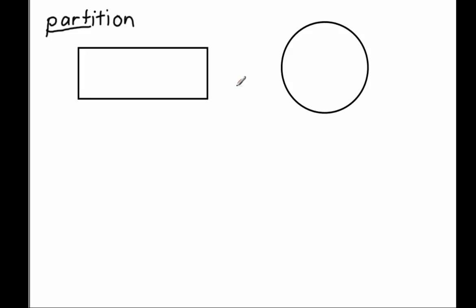When you have something like a candy bar or a cookie and you begin to break it apart, you begin to share it. But in this case we want to talk about equal shares, and equal shares mean that they will have the same amount being given in every single share.